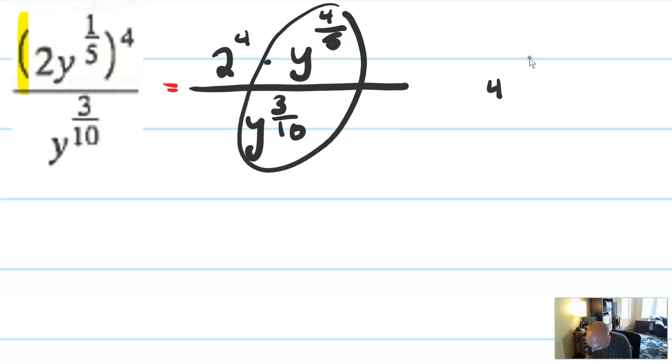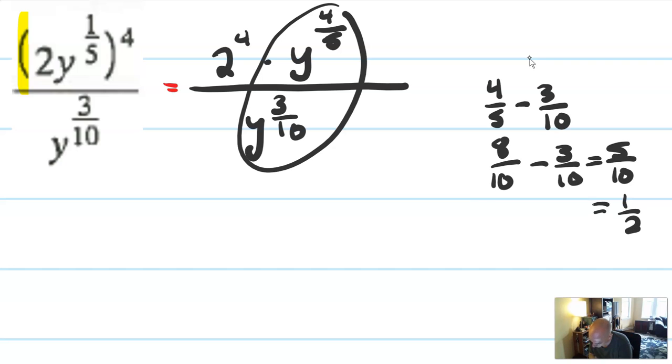That's the same as 8 10ths minus 3 10ths or 5 10ths. Oh, look at this. This is beautiful. 5 10ths, which is 1 half. So this is going to simplify to 2 to the 4th is 16 times y to the 1 half. Because of 4 5ths minus 3 10ths. And this I might write as 16 times the square root of y, if I really wanted to. And that's how I would simplify this one.